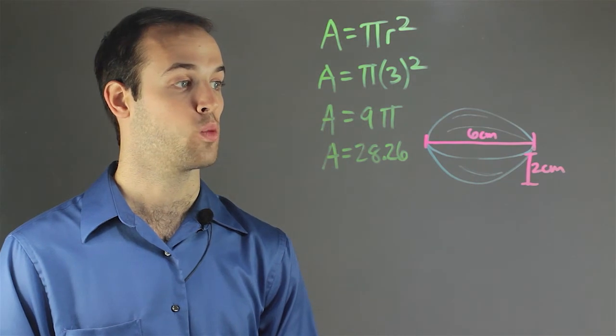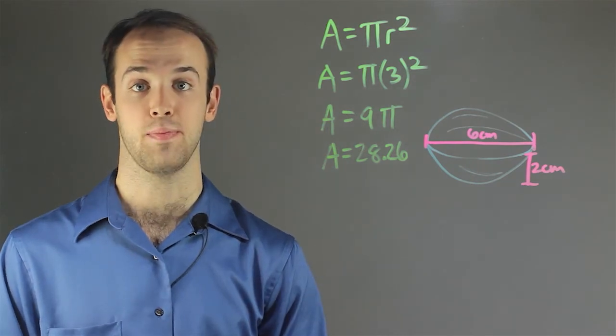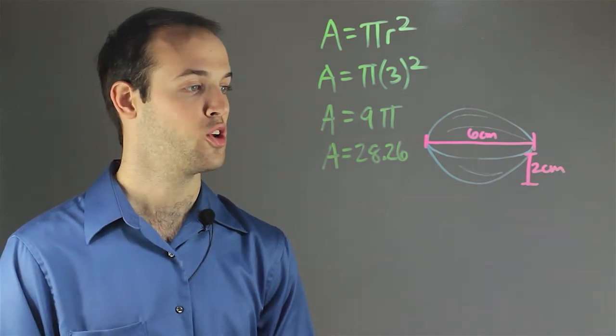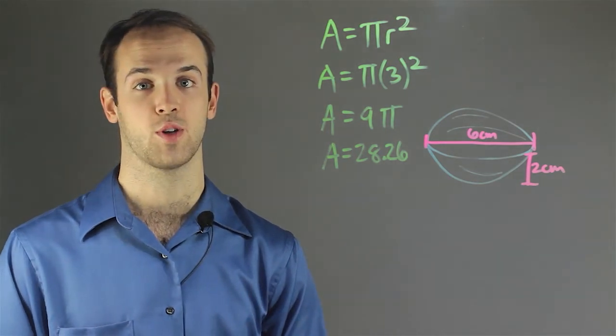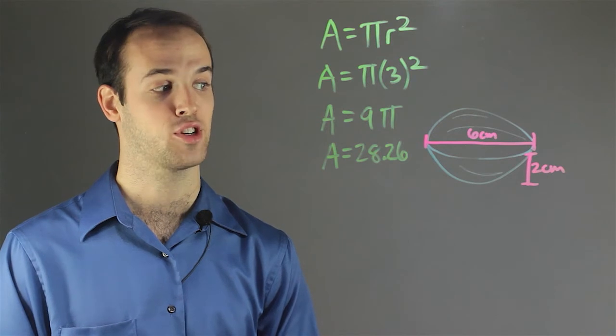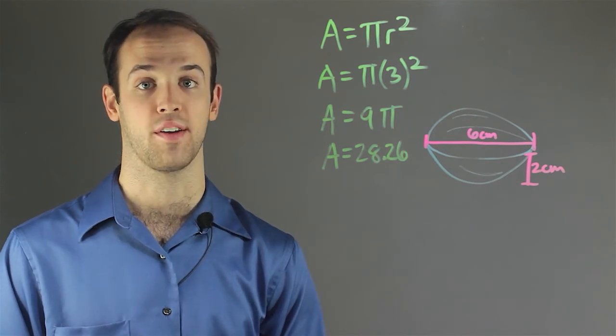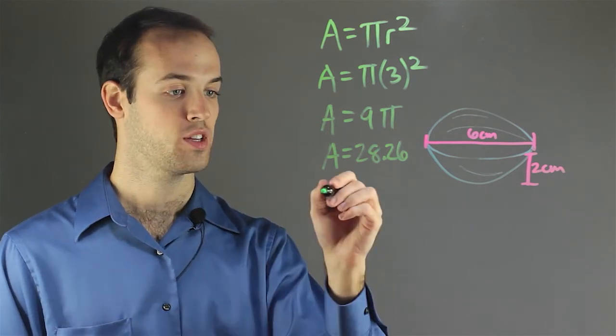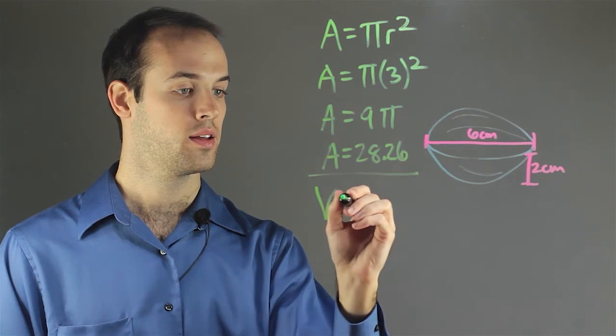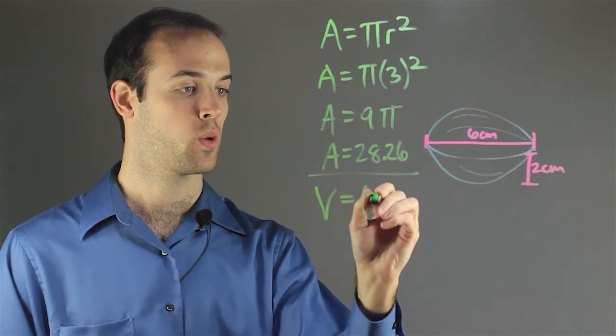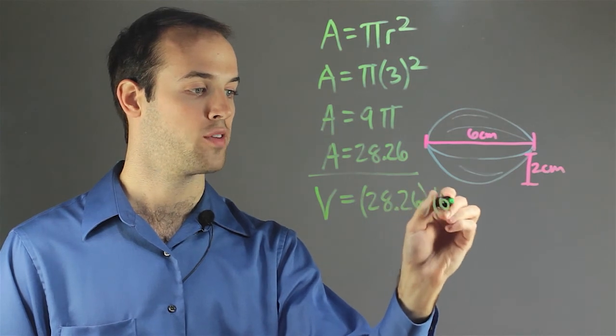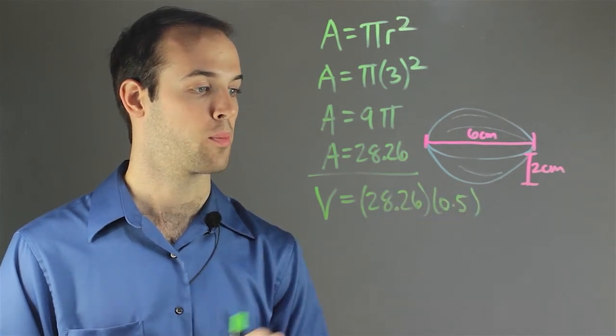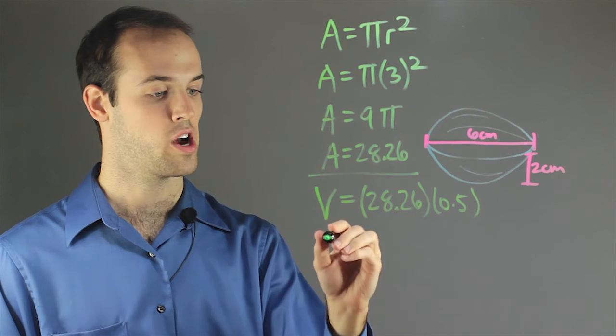And then to go to volume, we're just going to need to multiply that by how deep it is. And if we know it's 2 at the deepest point, I know that it's not going to be 2 all the way around. So I'm going to estimate that the average depth is going to be about 0.5 centimeters. So I'm going to multiply our 28.26 by 0.5 to get an approximation for the volume of this seashell.